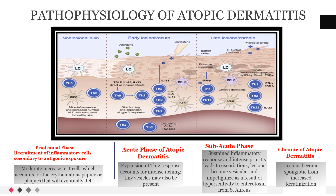Pathophysiology of atopic dermatitis. The prodromal phase involves the recruitment of inflammatory cells secondary to antigenic exposure — that is, exposure to allergen. It involves a moderate increase in T cell expression, which accounts for the erythematous papules or plaques that will eventually itch.